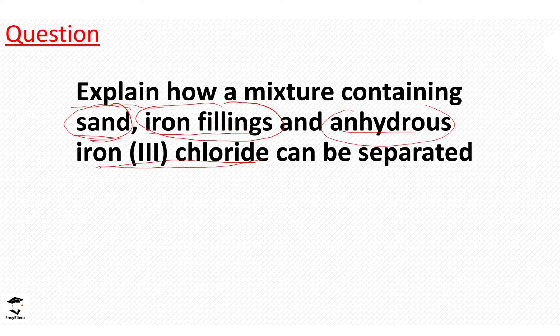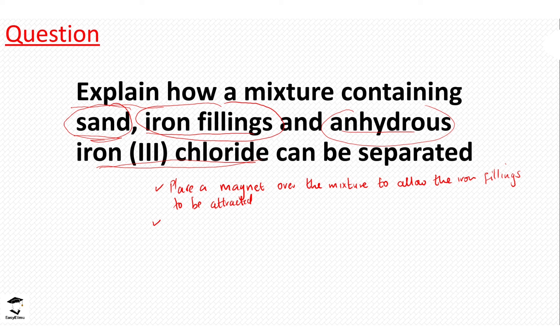We use the magnet before sublimation because sublimation involves heat, and we do not want to apply heat first as it might interfere with the mixture. So the first step is to hover a magnet over the mixture to attract and remove the iron filings. After the iron filings are removed, we are left with sand and anhydrous iron(III) chloride. Since anhydrous iron(III) chloride is a compound that sublimes when heated, the next step is to heat the remaining mixture in a beaker and place a watch glass containing water over it, allowing the anhydrous iron(III) chloride to sublime and be collected as a sublimate.